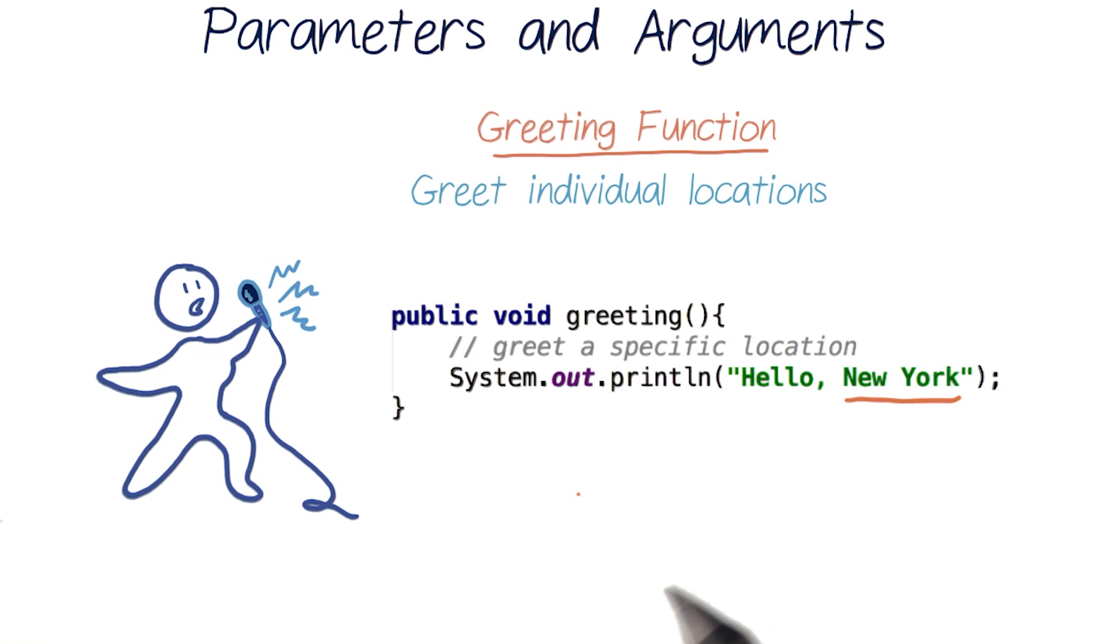So far, we've just seen functions work using internal information, like variables or values we type in. But this time, we want to be able to give our function information from the outside world, outside of this definition. We want to give it the location of a performance and have it respond.